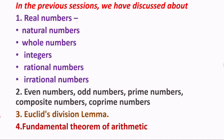In our previous sessions, we discussed the various types of real numbers. First, we discussed natural numbers, then whole numbers, integers, rational numbers, and irrational numbers — all of which are known as real numbers. These natural numbers have also been divided into even numbers, odd numbers, prime numbers, composite numbers, and co-prime numbers. We will quickly revisit all of these now.